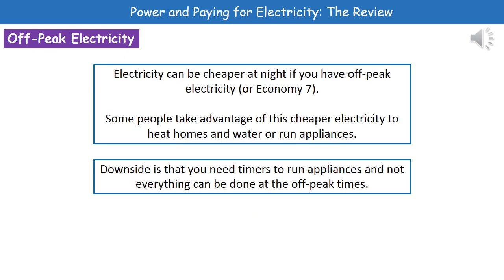Some people have something called off-peak electricity. This tells us that at certain points in the day or night the electricity is cheaper to use. It's called off-peak, or sometimes Economy 7. If you have this, you can take advantage of this cheaper period, though they usually put it in the awkward hours of the night — so you can use that cheaper electricity to heat your home or run appliances.